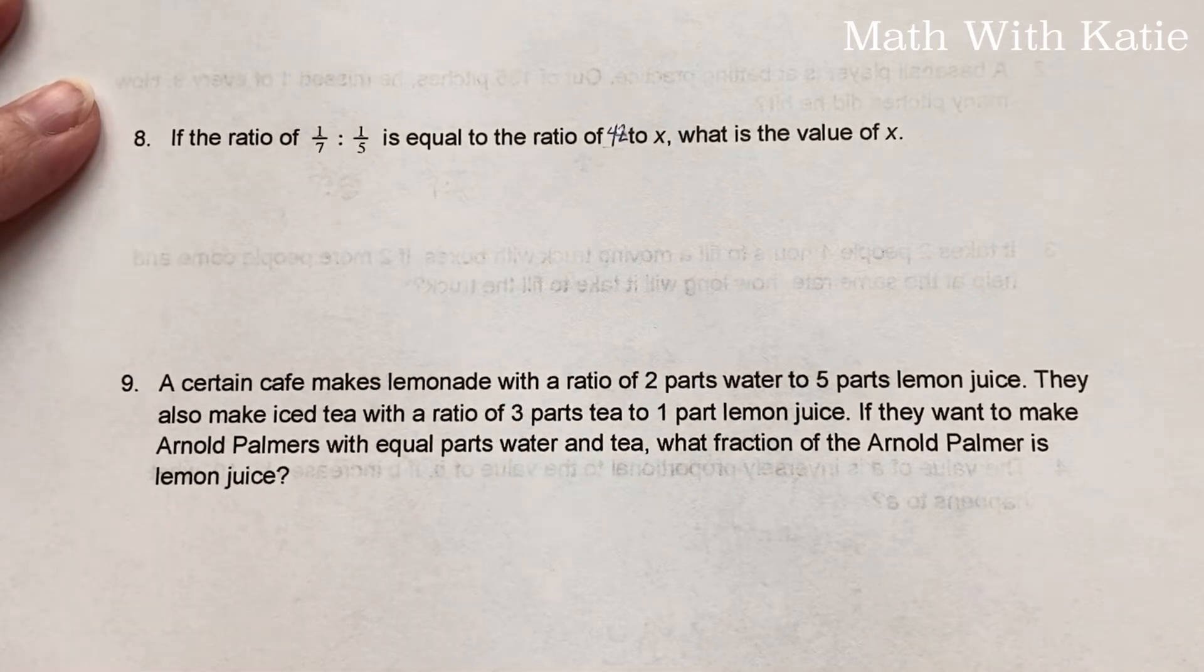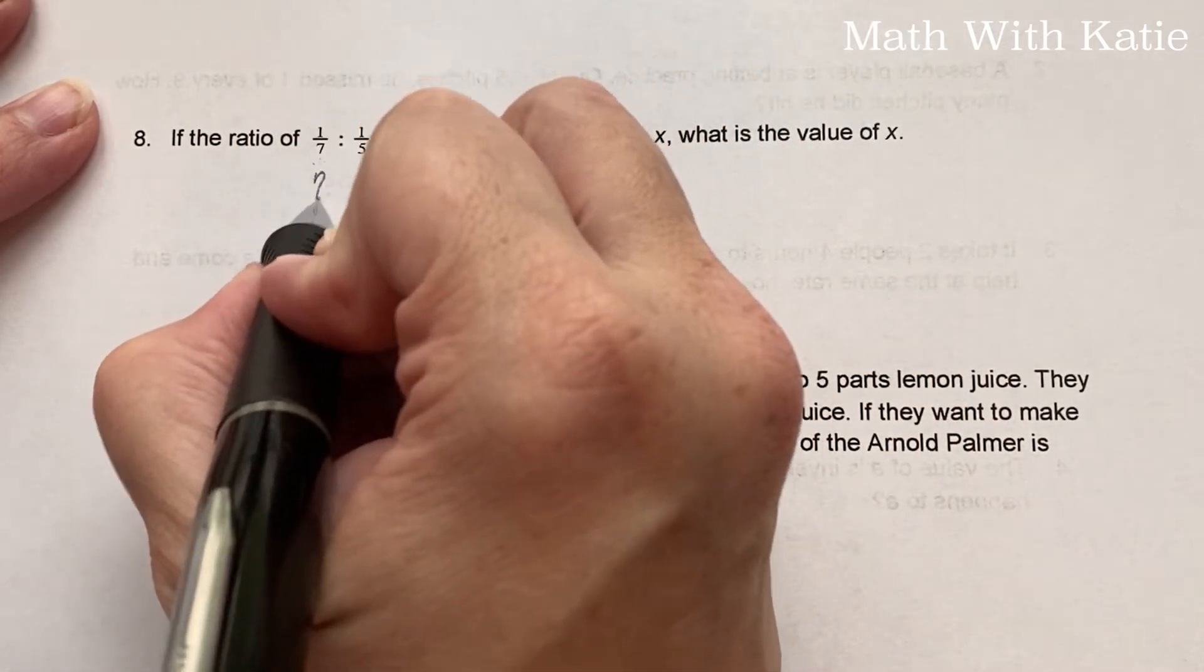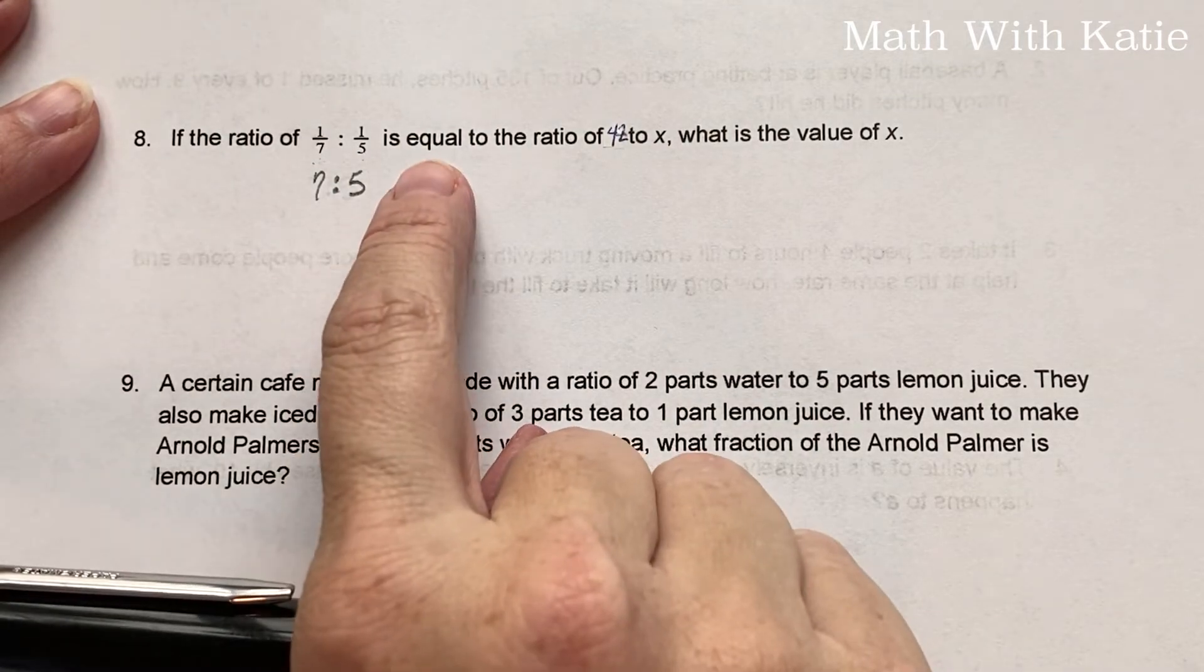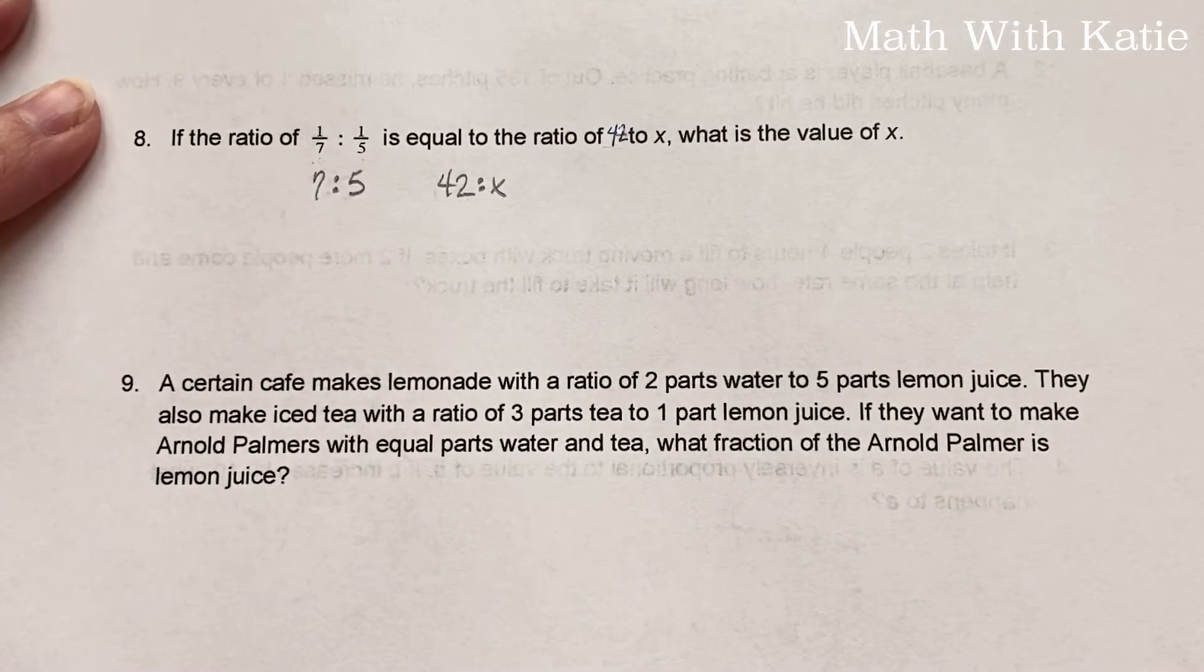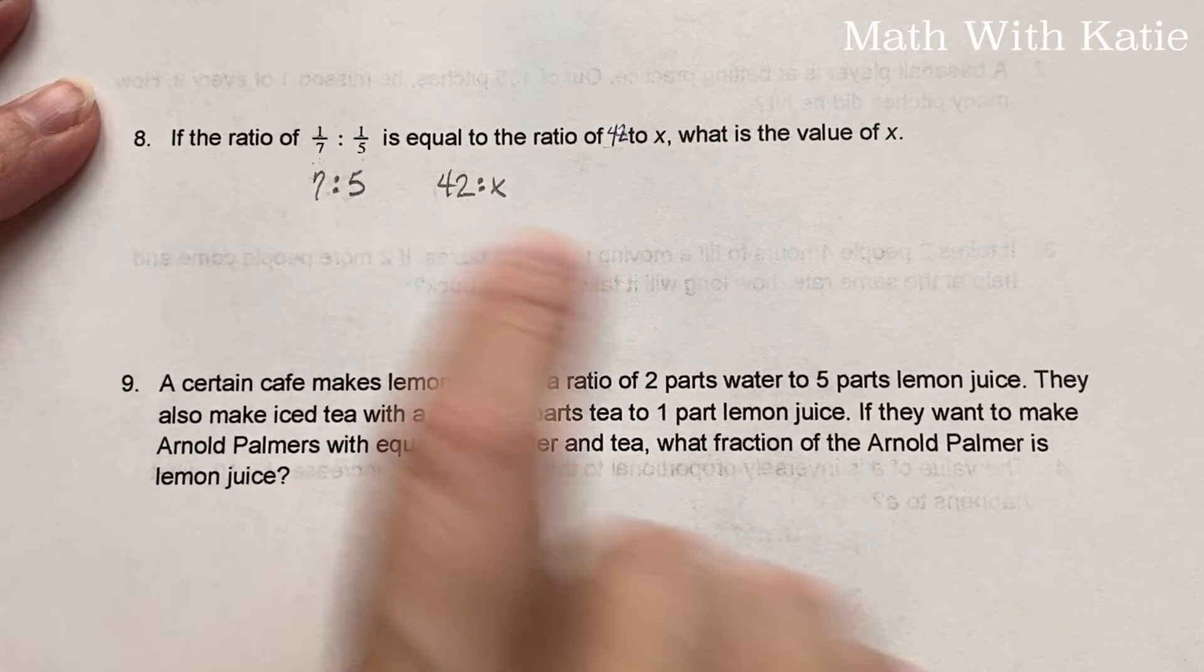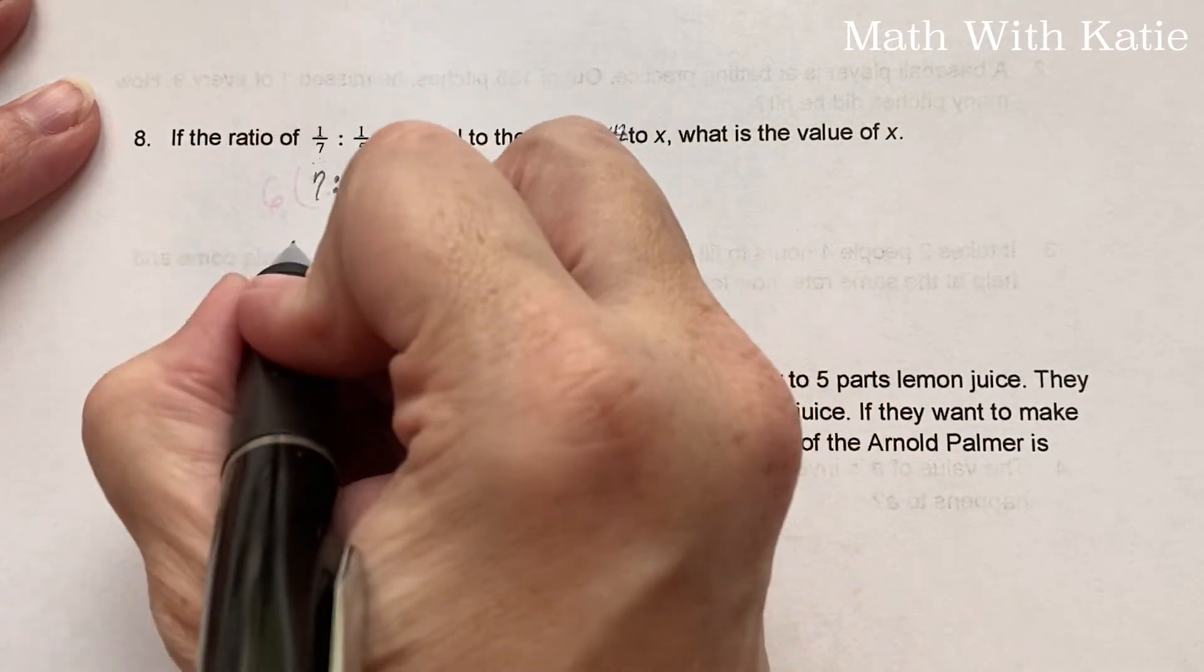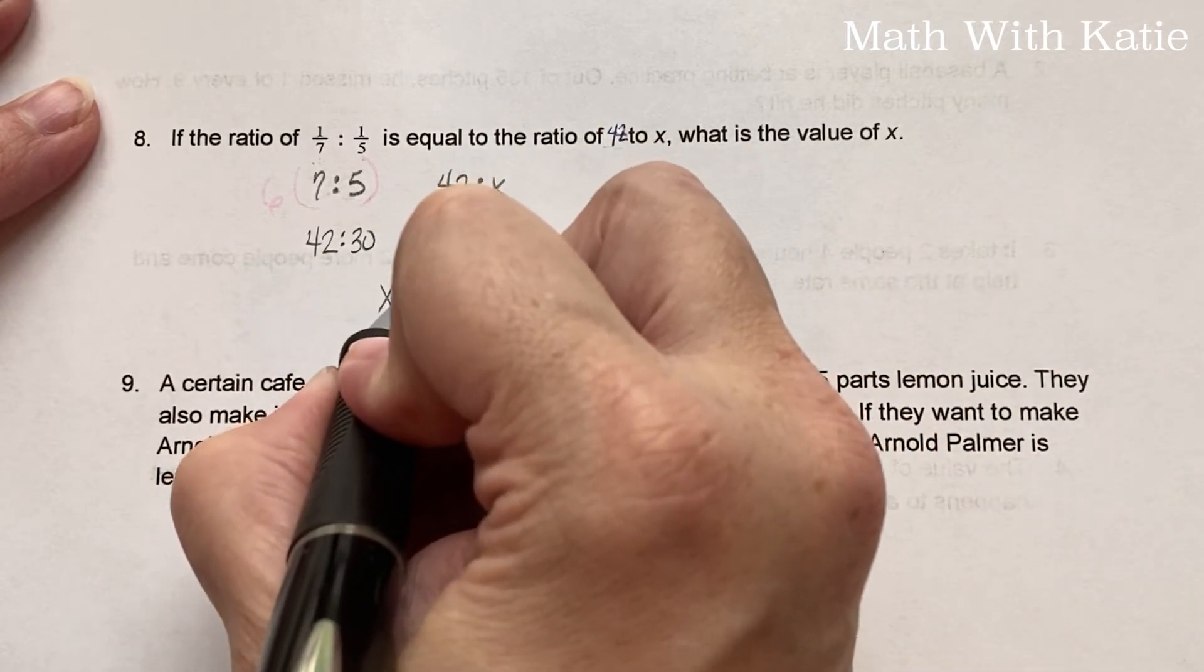If the ratio of 1/7 to 1/5 is equal to the ratio of 42 to X, what is the value of X? So first of all, we're going to do the reciprocal of both of these. So 7 to 5. That is equal to the ratio of 42 to X. So what can we multiply 7 by to get 42? That would be 6. So we're going to multiply all of this by 6. So we get 42 to 30. So X equals 30.